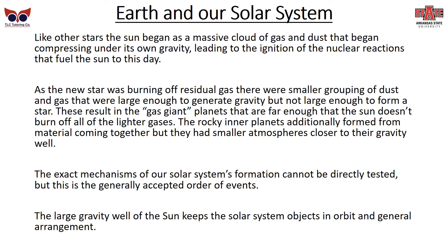Specifically about Earth and our solar system — like other stars, the Sun began as a massive cloud of gas and dust that began compressing under its own gravity, leading to the ignition of the nuclear reactions that fuel the Sun to this day. As the new star was burning off residual gas, there were smaller groupings of dust and gas large enough to generate gravity but not large enough to form a star. These result in the gas giant planets that are far enough away that the Sun doesn't burn off all the lighter gases. The rocky inner planets additionally form from material coming together, but they have smaller atmospheres close into their gravity well — the lighter materials get blown away by the solar wind. The exact mechanisms of our solar system's formation cannot be directly tested, but this is the generally accepted order of events.